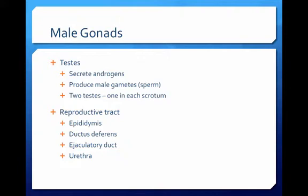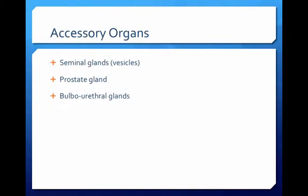Sperm travel from the testes to the epididymis, to the ductus deferens or vas deferens, to the ejaculatory duct, to the urethra, where they are ejected from the body. These structures are called the reproductive tract. The reproductive tract also has accessory organs that secrete fluids into the ejaculatory ducts and the urethra. These glands include the seminal glands or seminal vesicle, the prostate gland, and the bulbo-urethral gland.